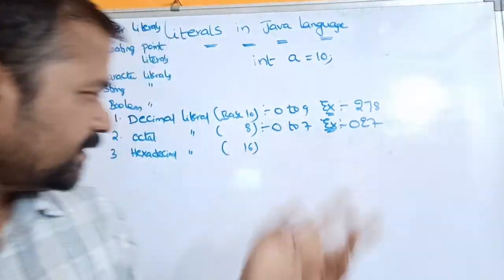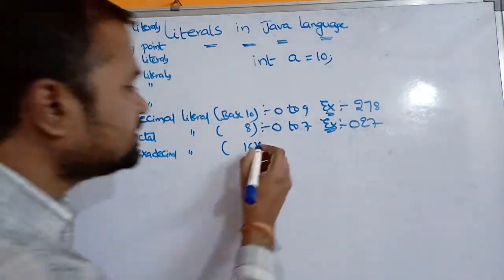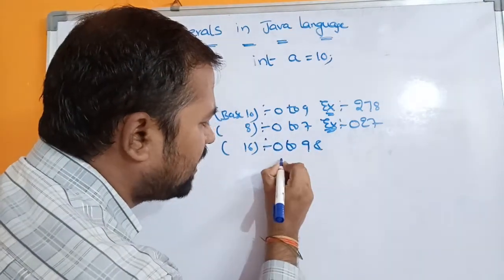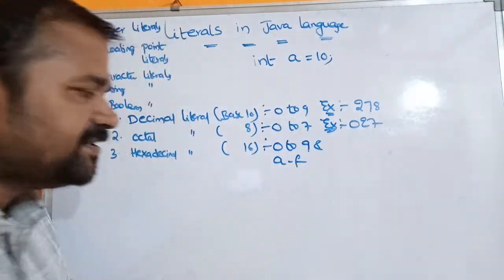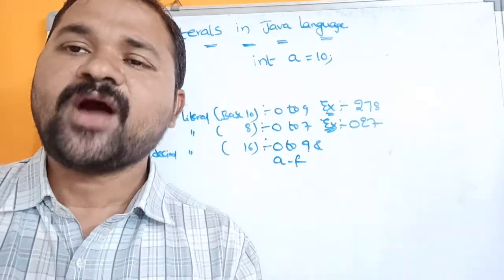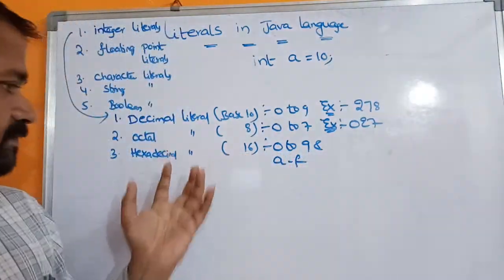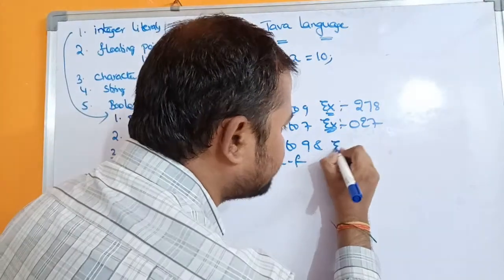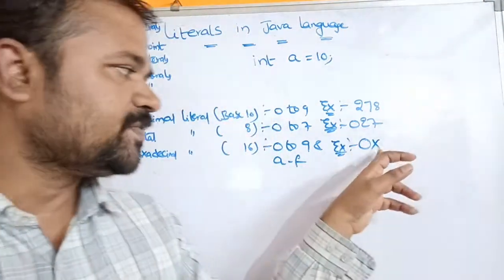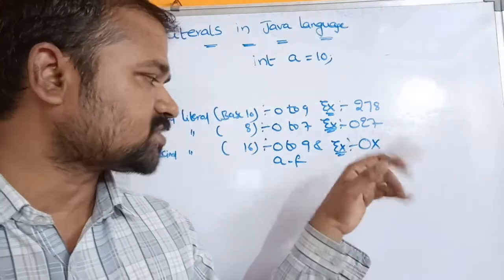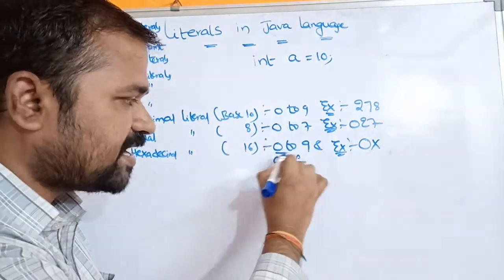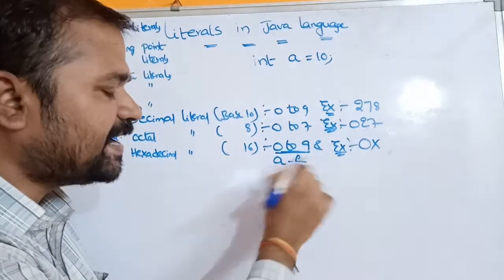The third type is hexadecimal literal. It allows digits from 0 to 9 and a to f, which may be either in lowercase or uppercase letters. A hexadecimal literal always begins with 0x, where x may be either lowercase or uppercase.